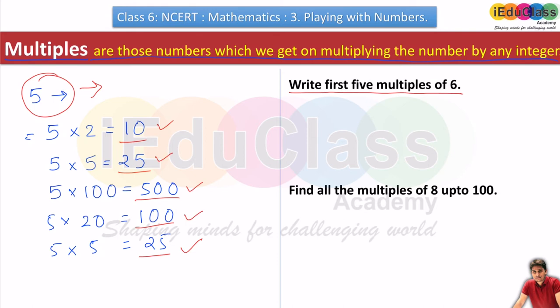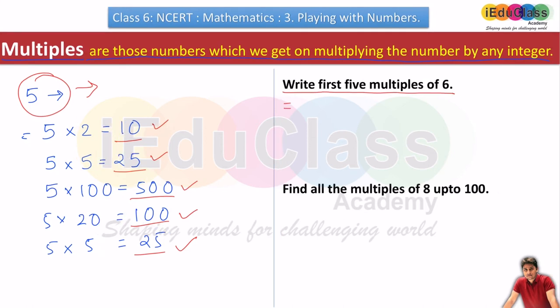First multiples means first five numbers. 6×1, I will get 6. 6×2, I will get 12. 6×3, I will get 18. 6×4, I will get 24. And 6×5, I will get 30.